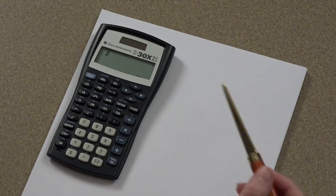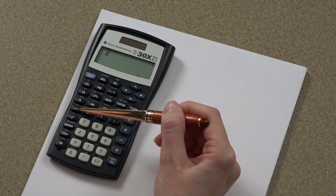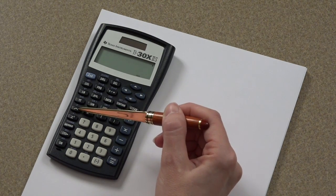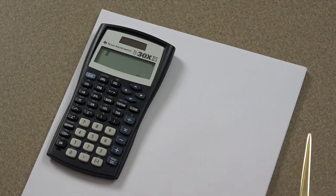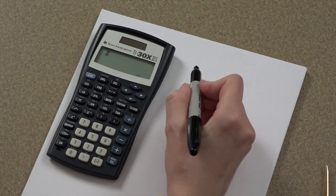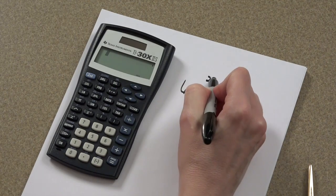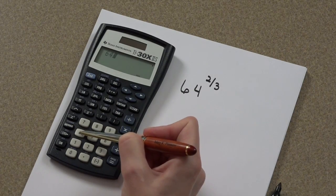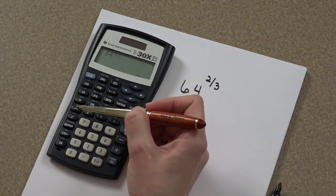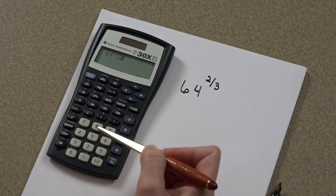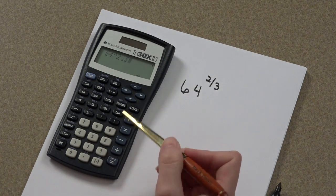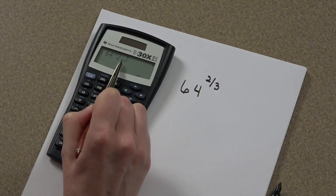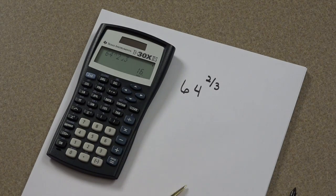What's really awesome about this caret key, you can actually enter fractional exponents using your caret key and your fraction button. Let me show you 64 to the 2 thirds power. 6, 4, caret key, that's our exponent, 2, fraction key, 3. Again, what this means is 64 taken to the 2 thirds power. We press equal and we get 16.